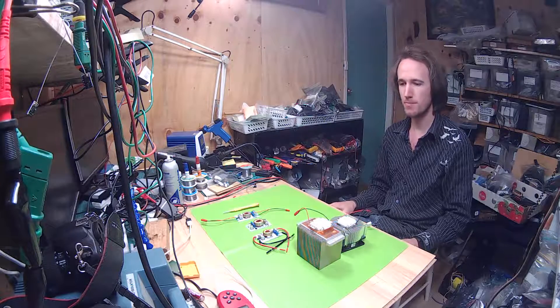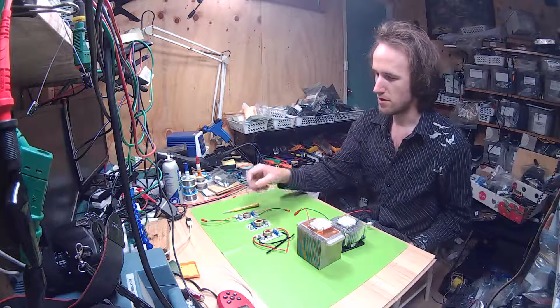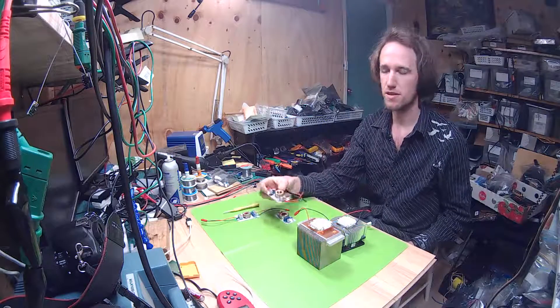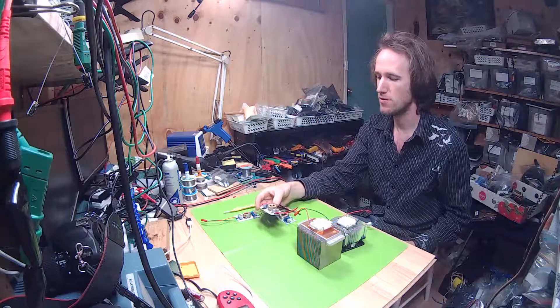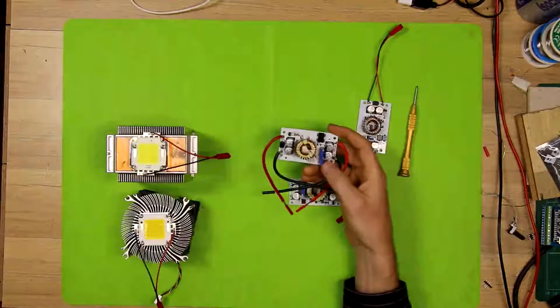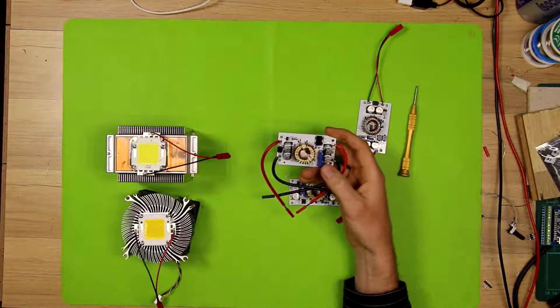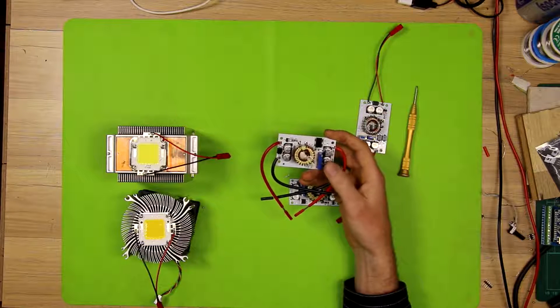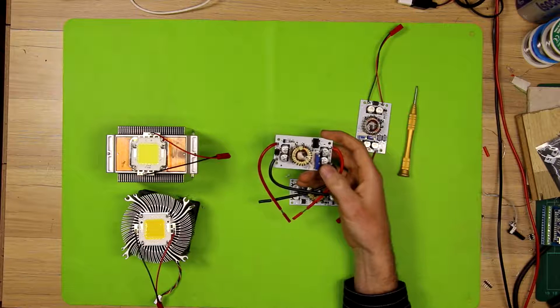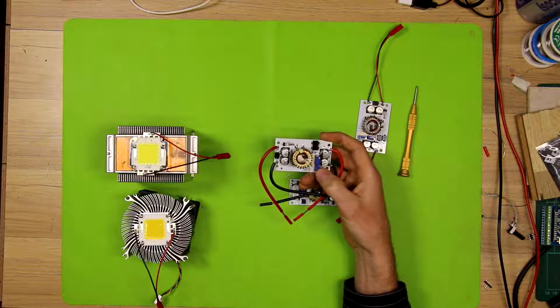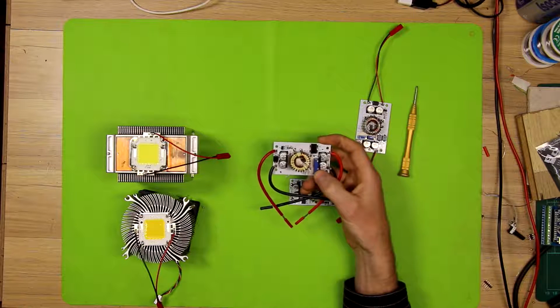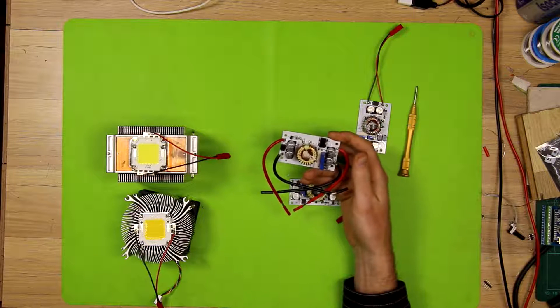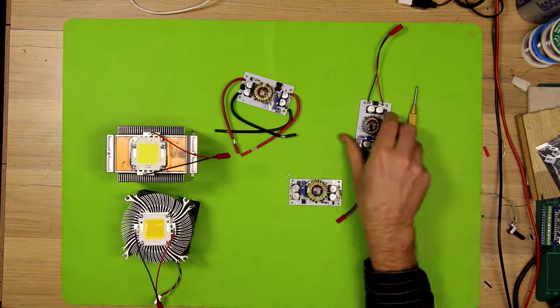So these driver modules here, this is how they come from eBay. They're advertised as 10 amp modules. They go well above 30 volts for their maximum output voltage. They're voltage adjustable by one of these potentiometers, little 10-turn pots, and current adjustable by the other potentiometer.